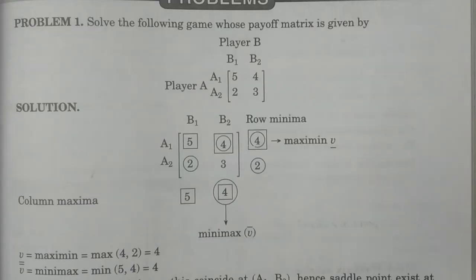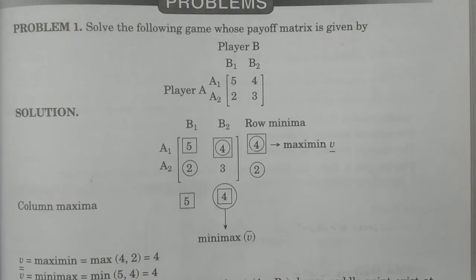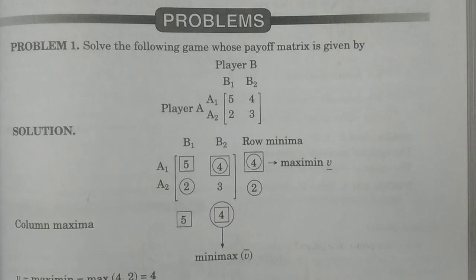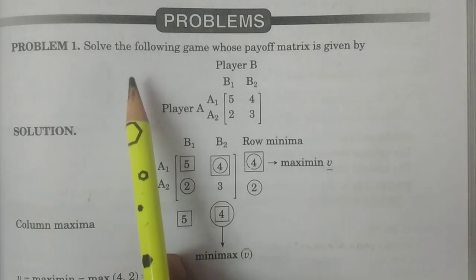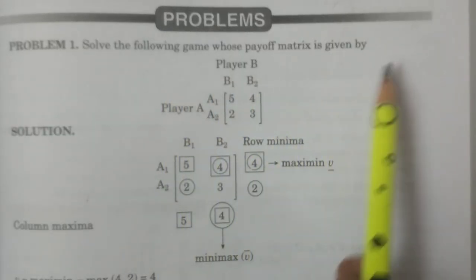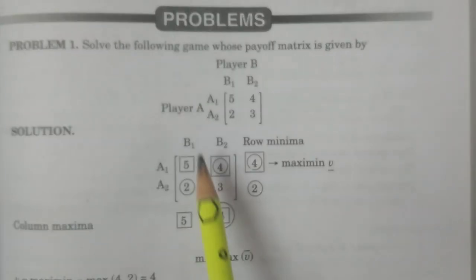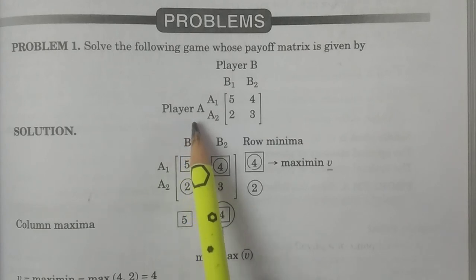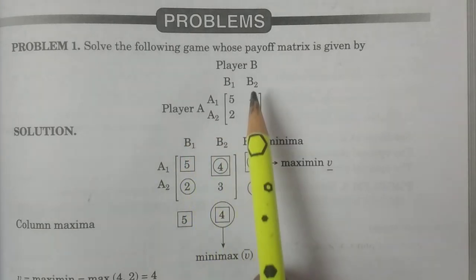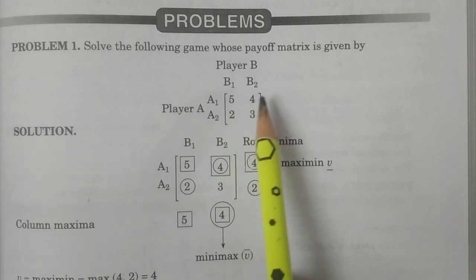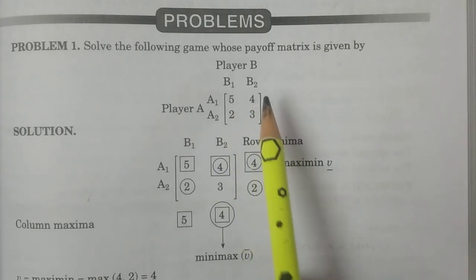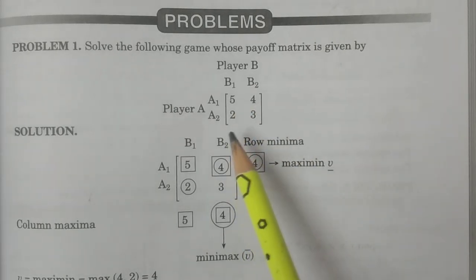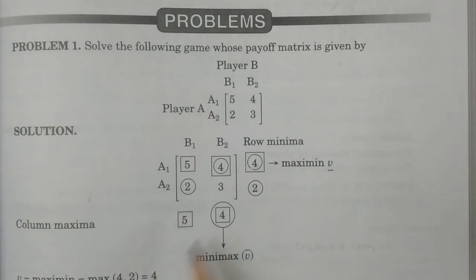For example, consider this particular problem. Solve the following game whose payoff matrix is given. Player A is having two strategies, A1 and A2. Player B also has two strategies, B1 and B2. This is the matrix you have to consider.